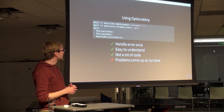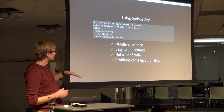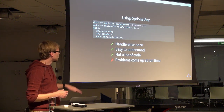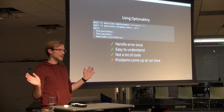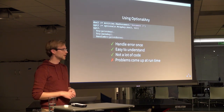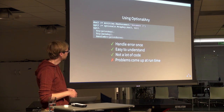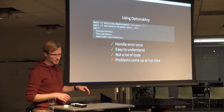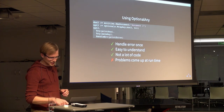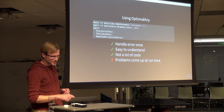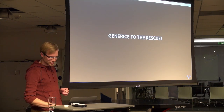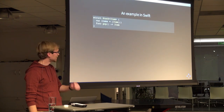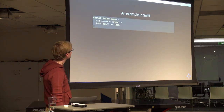For me, that last one's a deal breaker. The fact that problems are going to come up at runtime is enough for me to wash my hands of this and give up. So that seemed like a dead end. But there's this thing called generics. And if you're not familiar with generics, I'm going to show an example in Swift, because I like Swift a lot and this is really easy to read.